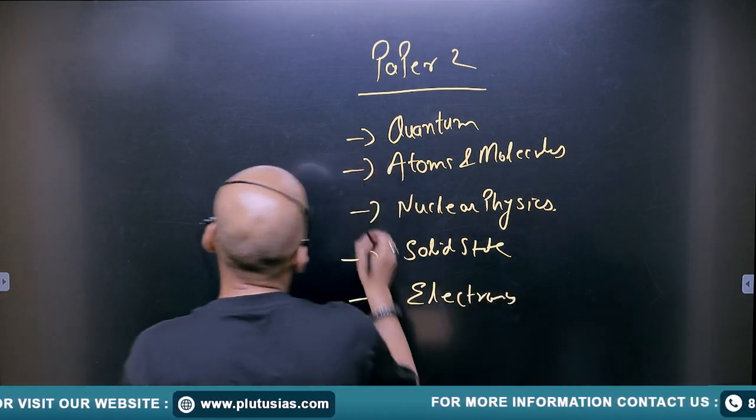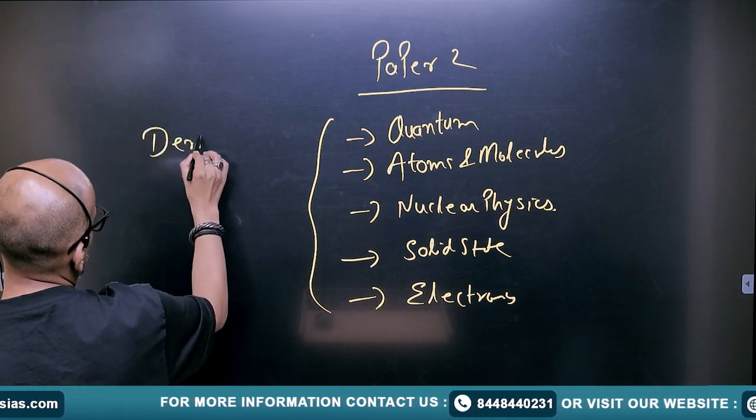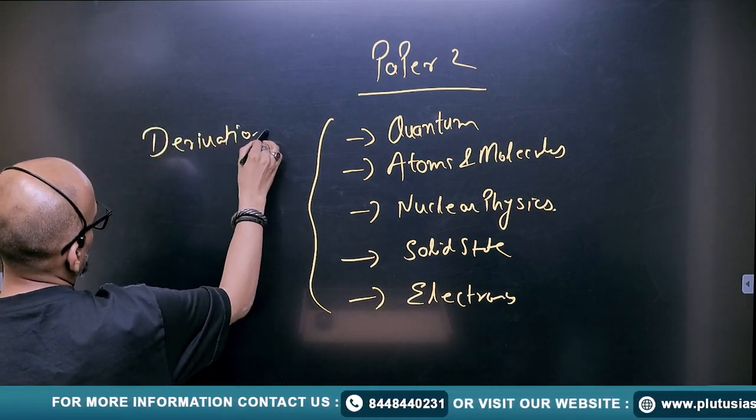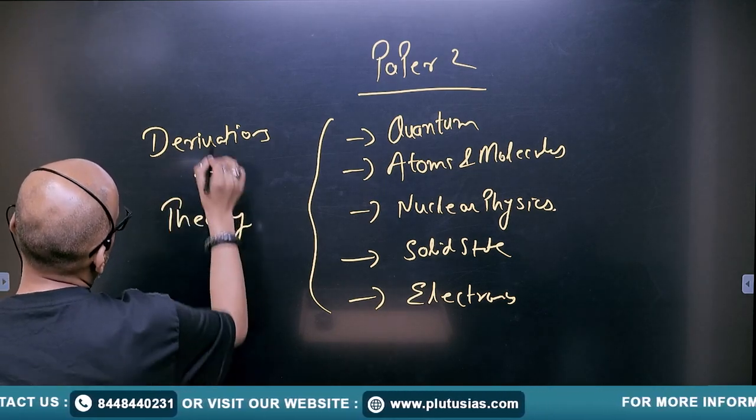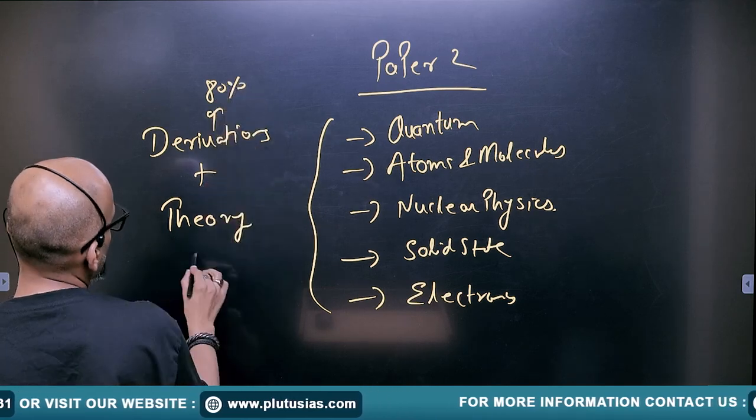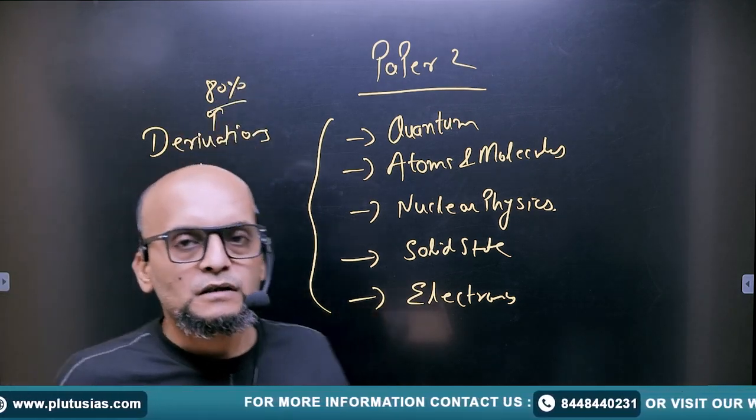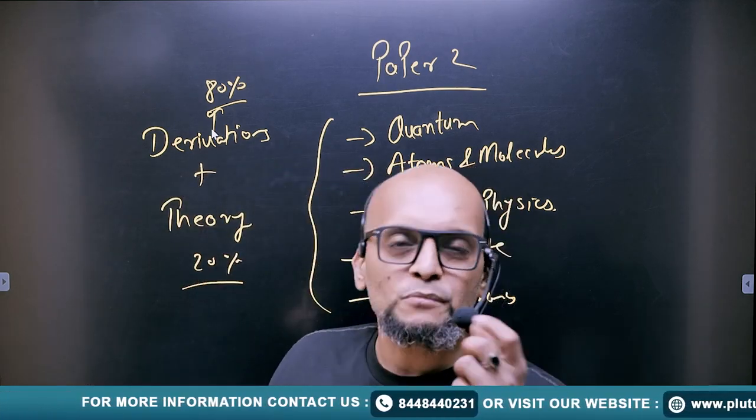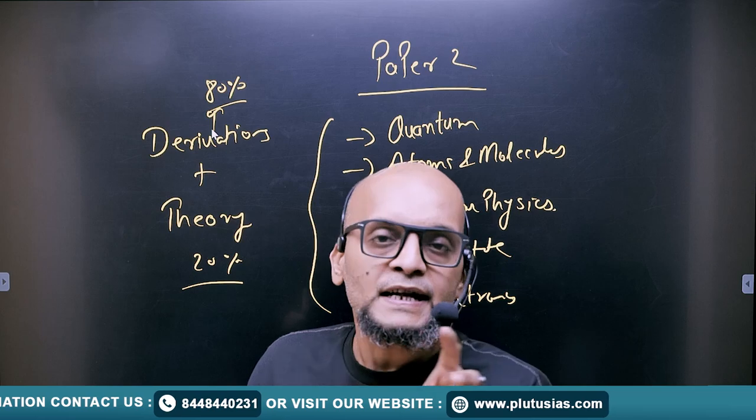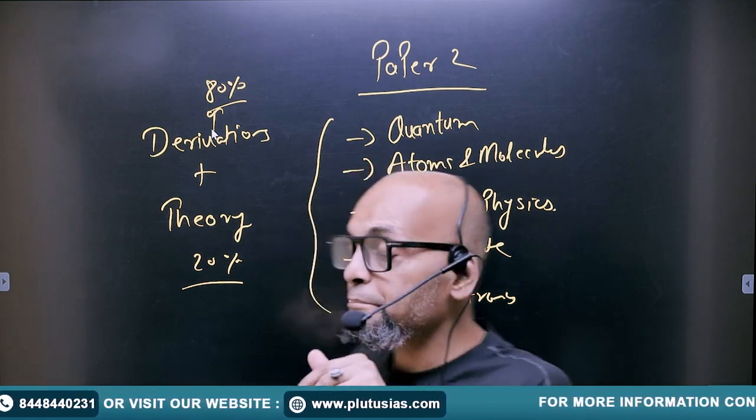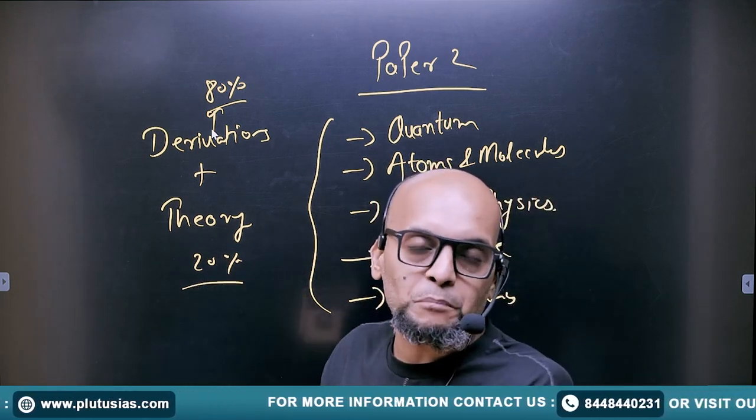Guys, from this portion you get derivations and 20% of theory. So 80% of derivation and 20% of theory you get from here. Numericals, sometimes they ask numericals from this portion also, but that's exceptional. Mostly derivation and theory. So in paper 2, you have to focus on the derivation part plus theoretical part.